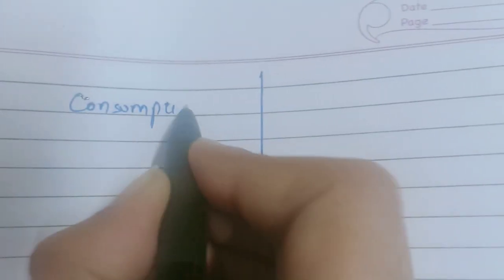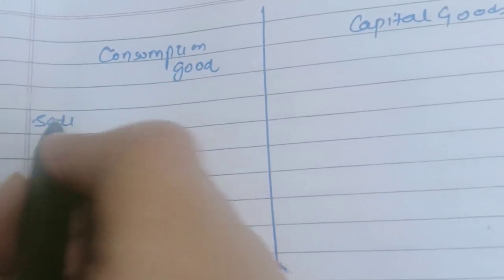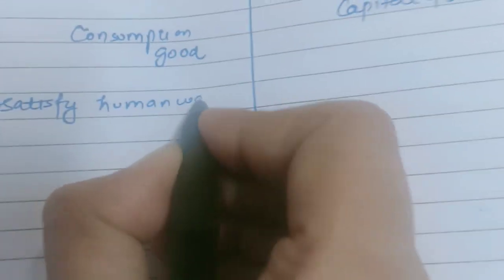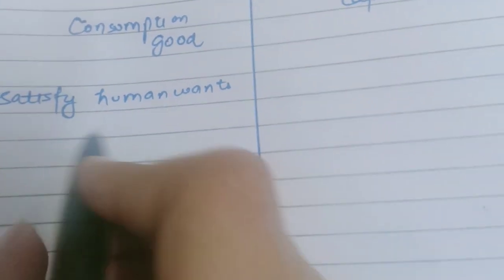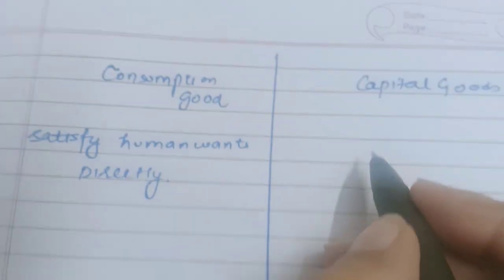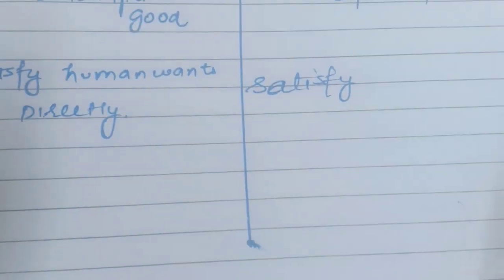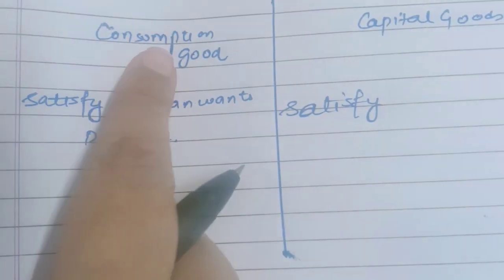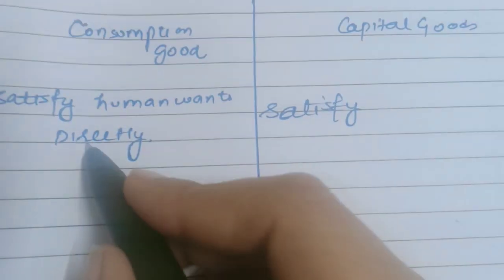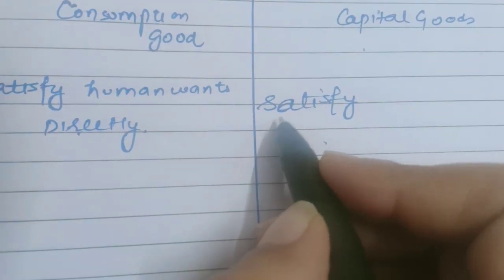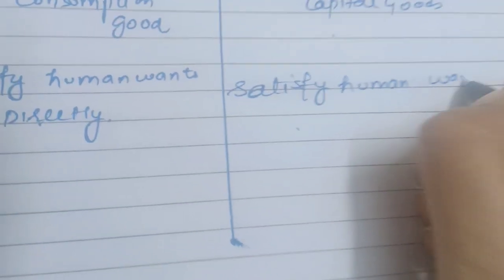The key difference between consumption goods and capital goods is that consumption goods satisfy human wants directly, while capital goods satisfy human wants indirectly. For example, a machine makes bread, and the bread satisfies the human wants — so bread is the consumption good because it directly satisfies, while the machine does so indirectly.